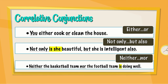Either or: you either cook or clean the house. Underlined you will find the correlative conjunctions. Not only but also: not only is she beautiful, but she is intelligent also. Look at the placement of the pronoun and the verb — the verb first, which is "is", then the pronoun "she". Also appears at the end in this case.